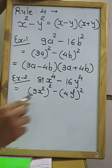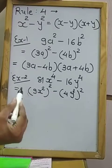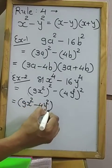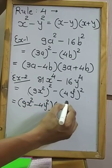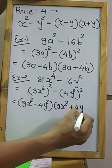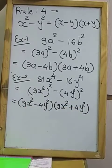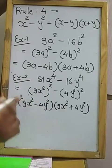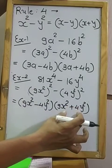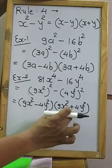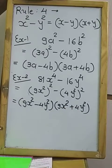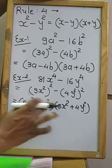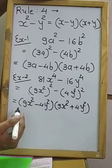Both sides are squares and minus is in between, so: first bracket is (9x² − 4y²) and second bracket is (9x² + 4y²). The second bracket has two terms with a plus — there is no factorization method for that — so we leave the second bracket as (9x² + 4y²) and move further with the first bracket.